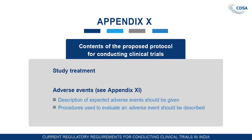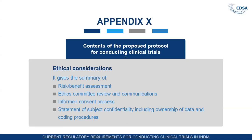Then the study treatment must also be required to be given. Then the adverse event section — description of expected adverse events and whatever available knowledge exists about adverse events must be mentioned. The procedure used to evaluate adverse events, as per the protocol that the CRO is following, must be described. Ethical considerations include a summary of risk-benefit assessment, ethics committee review and communication, informed consent processes and their SOP, and a statement of subject confidentiality including ownership of data and coding procedures to maintain confidentiality.